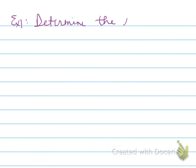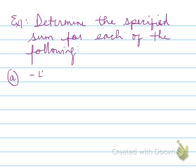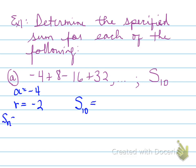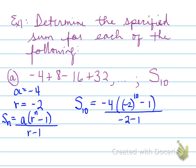Example number 1 asks you to determine the specified sum for each of the following terms. Part A, you have a particular sequence right there and you need to find S10. To do that, we need to determine, is this geometric or is this arithmetic? Very quickly you'll find out that this is a geometric sequence. The a value is negative 4, the r value is negative 2, and the S of 10 is equal to, well we need this formula. This is the geometric series formula, and we plug in all the values. And we find out that S of 10, so the sum of the first 10 terms, is equal to 1,364.